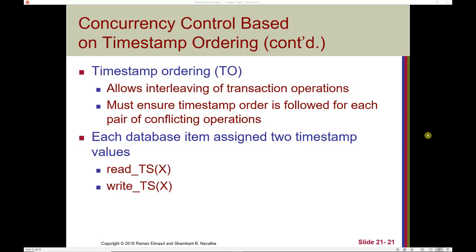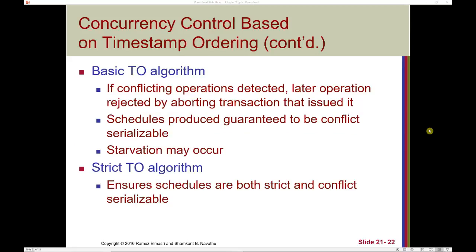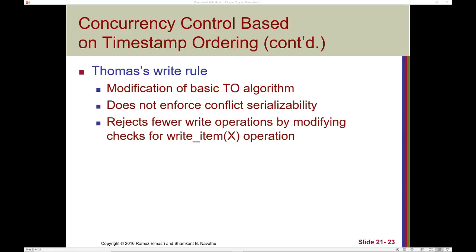Timestamp ordering allows interleaving of transaction operations. We must ensure the timestamp order is followed for each pair of conflicting operations. Each database item is assigned two timestamp values: a read timestamp and a write timestamp. In the basic timestamp ordering algorithm, if a conflicting operation is detected, the later operation is rejected. Schedules produced by timestamp ordering are guaranteed to be serializable, although starvation may occur. In strict timestamp ordering, schedules are both strict and conflict serializable.